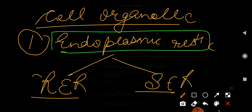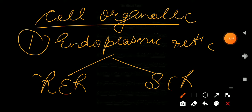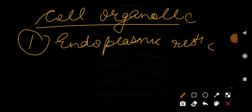Endoplasmic reticulum is of two types: rough endoplasmic reticulum and smooth endoplasmic reticulum. Before understanding the difference, first of all you should know what is the endoplasmic reticulum. The endoplasmic reticulum is a network of membrane-bound tubes.